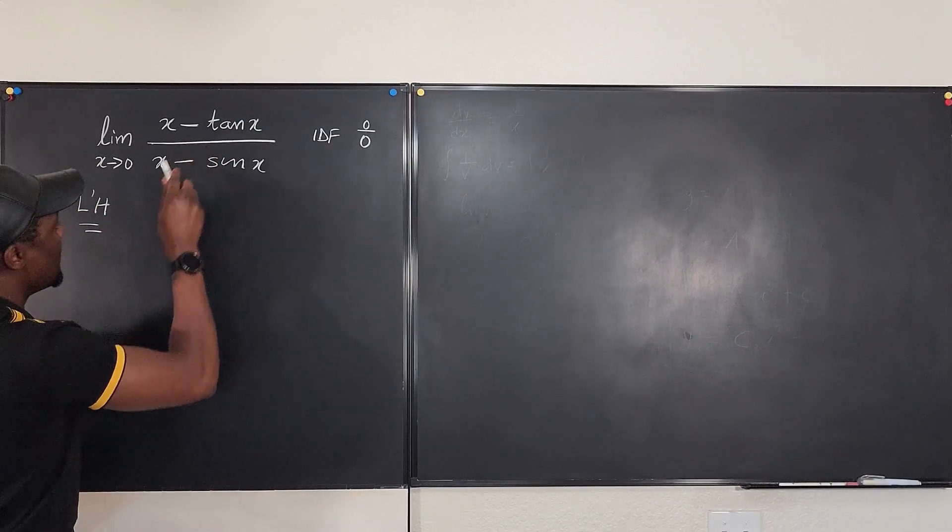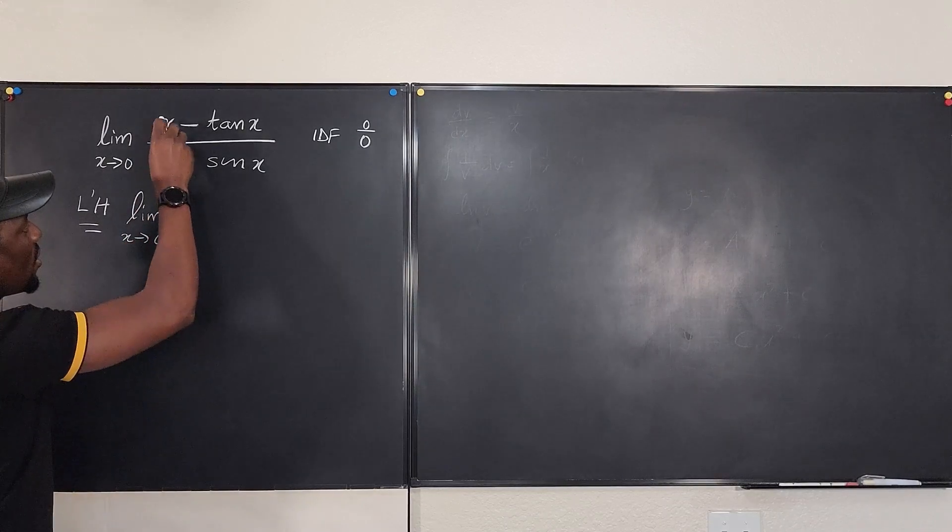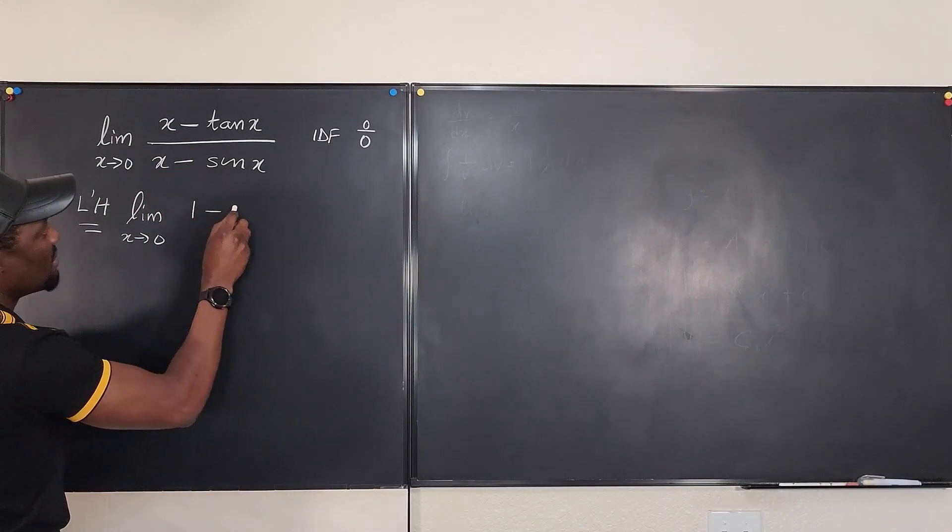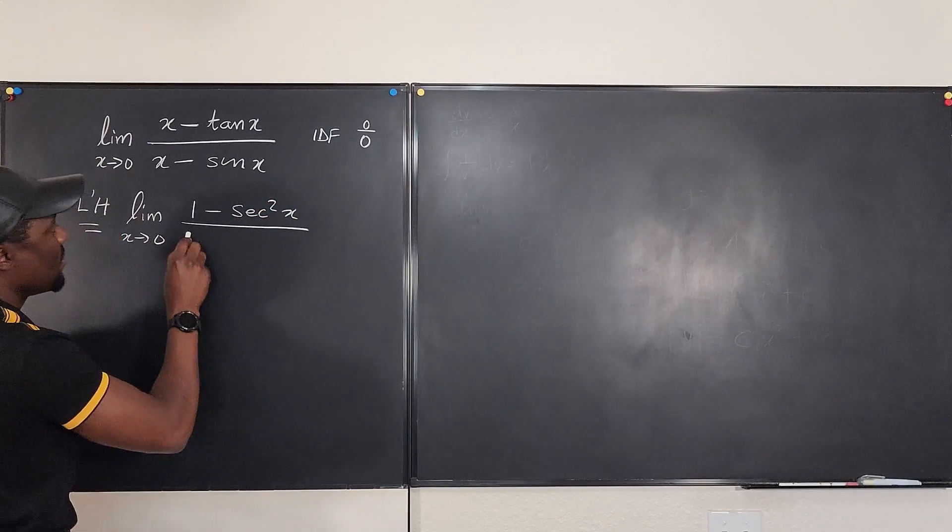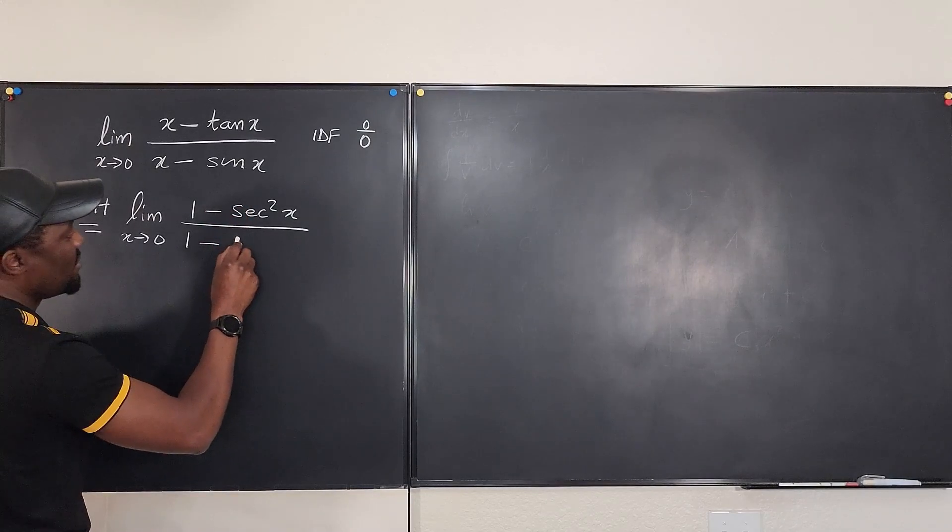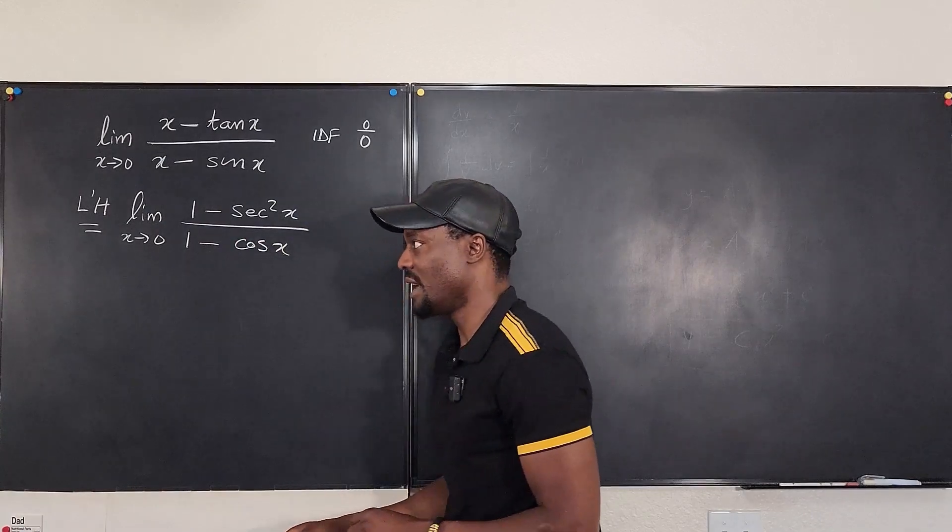We're going to have the derivative, it's going to be the same thing as the limit as x approaches 0 of the derivative of the top which is 1 minus secant squared x, over 1 minus the derivative of this is going to be cosine x. Now, let's try to do the plugin again.